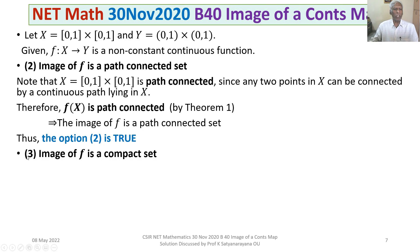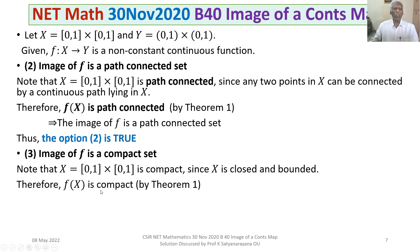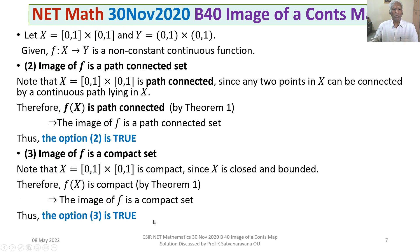Option 3: the image of f is a compact set. Note that X = [0,1] × [0,1] is compact because it is closed and bounded in ℝ². Therefore f(X) is compact, because the continuous image of a compact space is compact by Theorem 1. So the image of f is a compact set — Option 3 is also true.